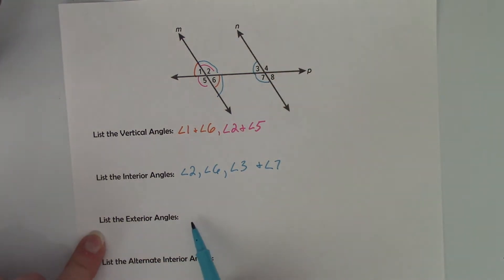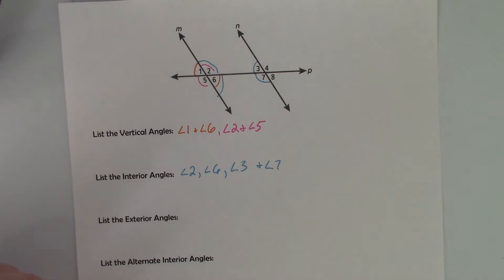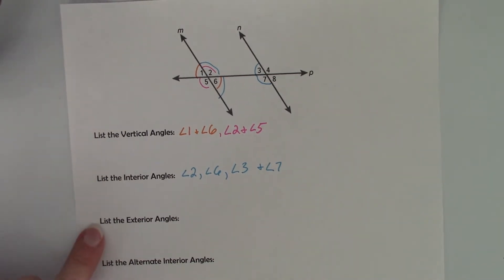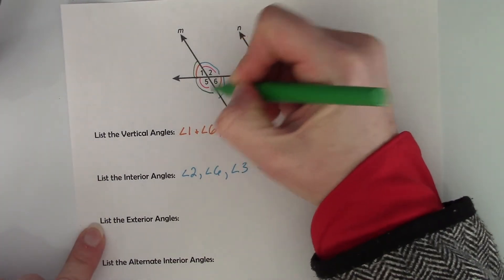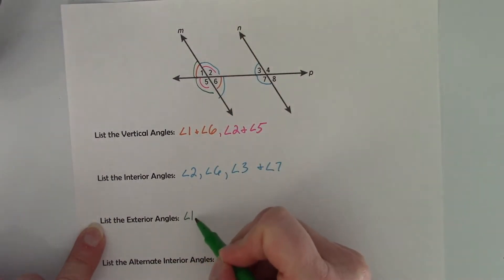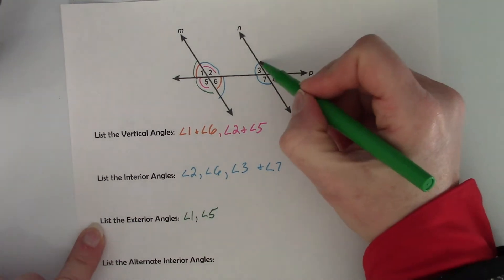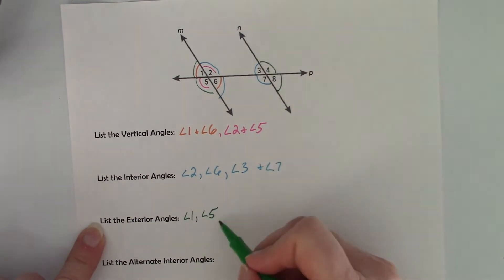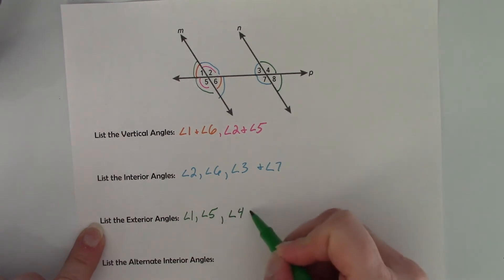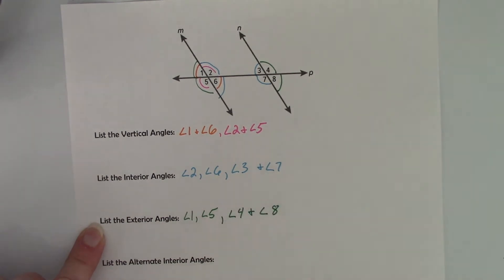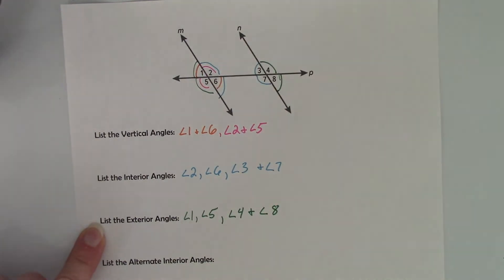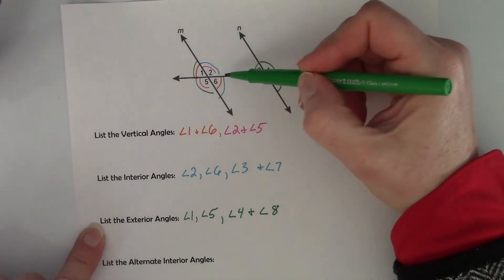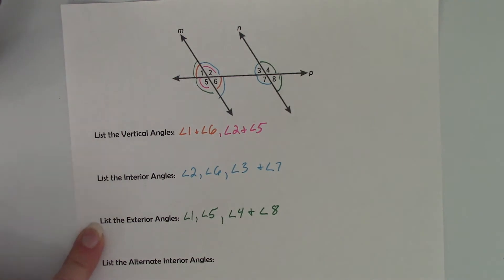So I bet you can guess what the exterior angles are. They are the angles on the outside of the parallel lines — four of those. So it would be angle 1, angle 5, angle 4, and angle 8. Exterior angles are on the outside of the two parallel lines; interior angles are on the inside. Easy enough.